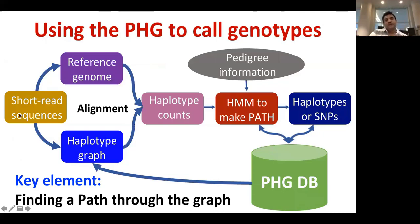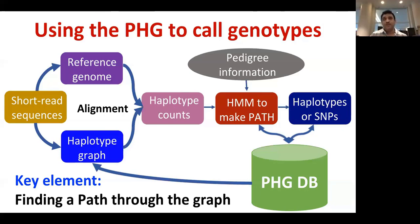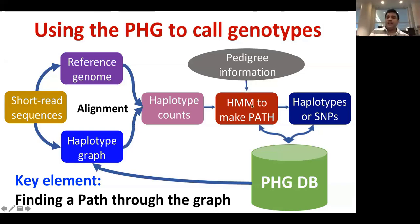You have low-coverage reads from one individual, then align to a reference genome as well as to the haplotype graph — aligning to the consensus sequences. Based on the alignment, we count how many sequences map to each consensus. Because of low-coverage sequencing, we cannot touch all possible intervals; we randomly cover some. We use the hidden Markov model to make a decision and find a path across the genome, using pedigree information if available. Once a path is identified for a given individual, we can output haplotypes, SNPs, or a custom genome.